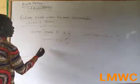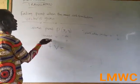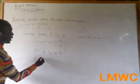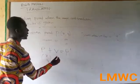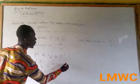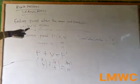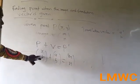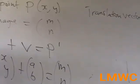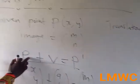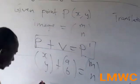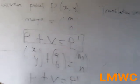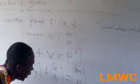We know that P plus V equals the image M. So if you want P, using this formula, you make P the subject of the relation. It becomes P equals M minus V — that is, P prime minus the translation vector. You move the translation vector to the right-hand side of the equation.